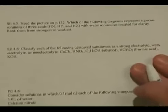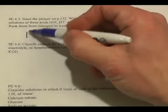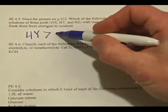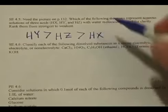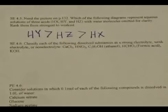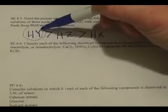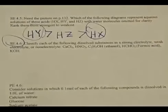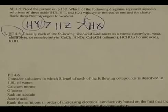They want it from strongest to weakest. Strongest is HY, next is HZ, and weakest is HX — because it formed the least ions, or the least charged particles in solution. This is the same with strong and weak electrolytes: HY is the strongest electrolyte, and HX is the weakest because it forms the fewest positive and negatively charged particles.